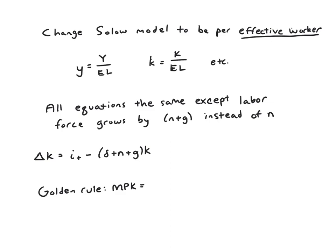We could also plot that graphically. We would have investment graphed like normal, and then we would graph delta plus n plus g times k, which would be a straight line like we've had in all previous iterations of the model. It would just be a straight line with a steeper slope, because now we have instead of plus n, we have plus n plus g.